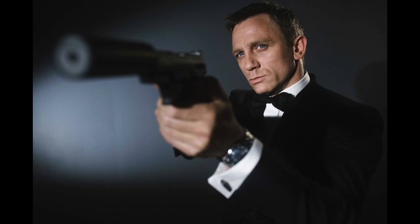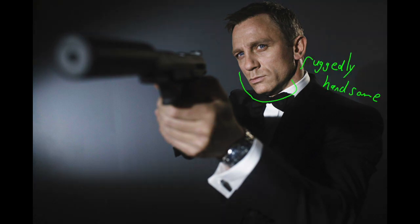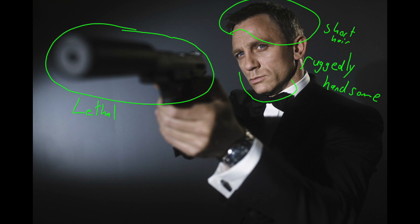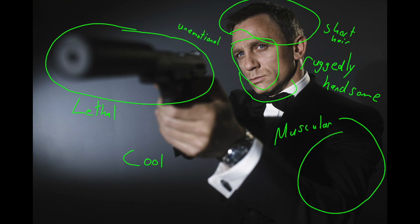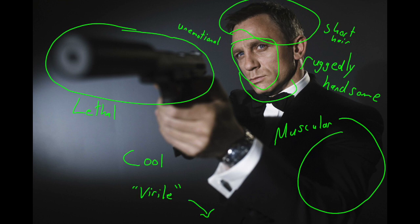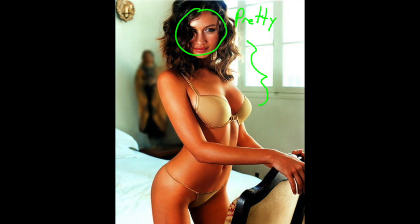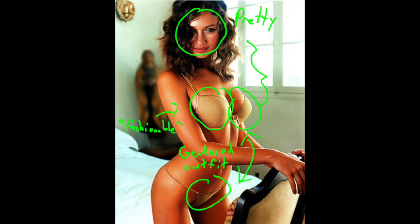So let's look at 007 here. He falls into a lot of traditional masculine categories: ruggedly handsome, short hair, lethal, cool, unemotional, muscular — and he gets the girl. Let's just say he's virile. Masculinity is the expectation that is then projected and internalized on those bodies marked as male. And taking a look at this Bond girl, we can see she's traditionally beautiful — and does she ever make a good sidekick. An important feature and asset of the stereotypical Western woman: fashionable, feminine clothing like a bikini, and she has long, well-kept hair. She's smiling.